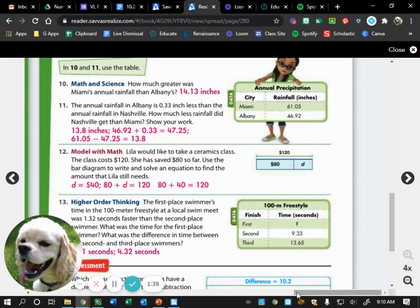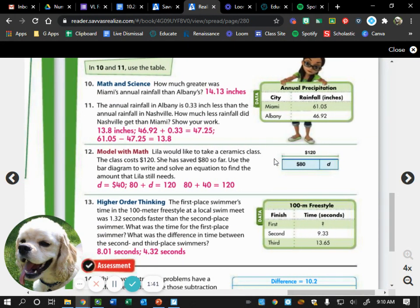So, we had number 12. So, number 12 said, Lila, or Lila, maybe, would like to take a ceramics class. The class costs $120. She has saved $80 so far. Use the bar diagram to write and solve an equation to find the amount that Lila still needs.